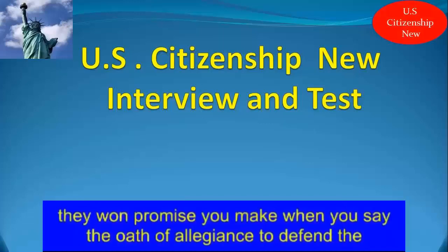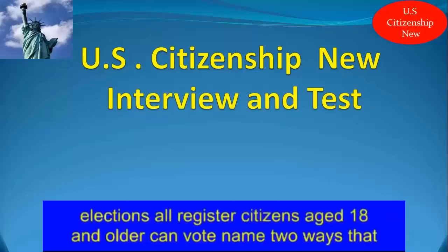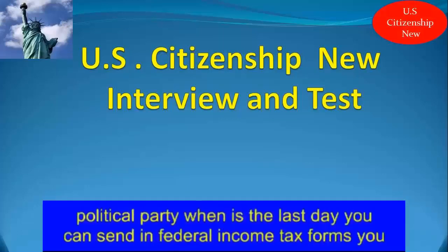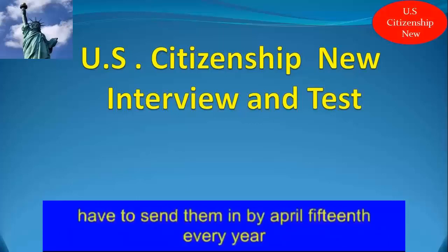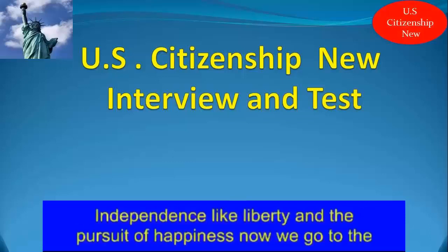Name one promise you make when you say the Oath of Allegiance. To defend the Constitution and the laws of the United States. Who can vote in U.S. presidential elections? All registered citizens age 18 and older can vote. Name two ways that Americans can participate in their democracy. You can vote and join a political party. When is the last day you can send in federal income tax forms? By April 15th every year. Name two natural or inalienable rights in the Declaration of Independence. Life, liberty, and the pursuit of happiness.